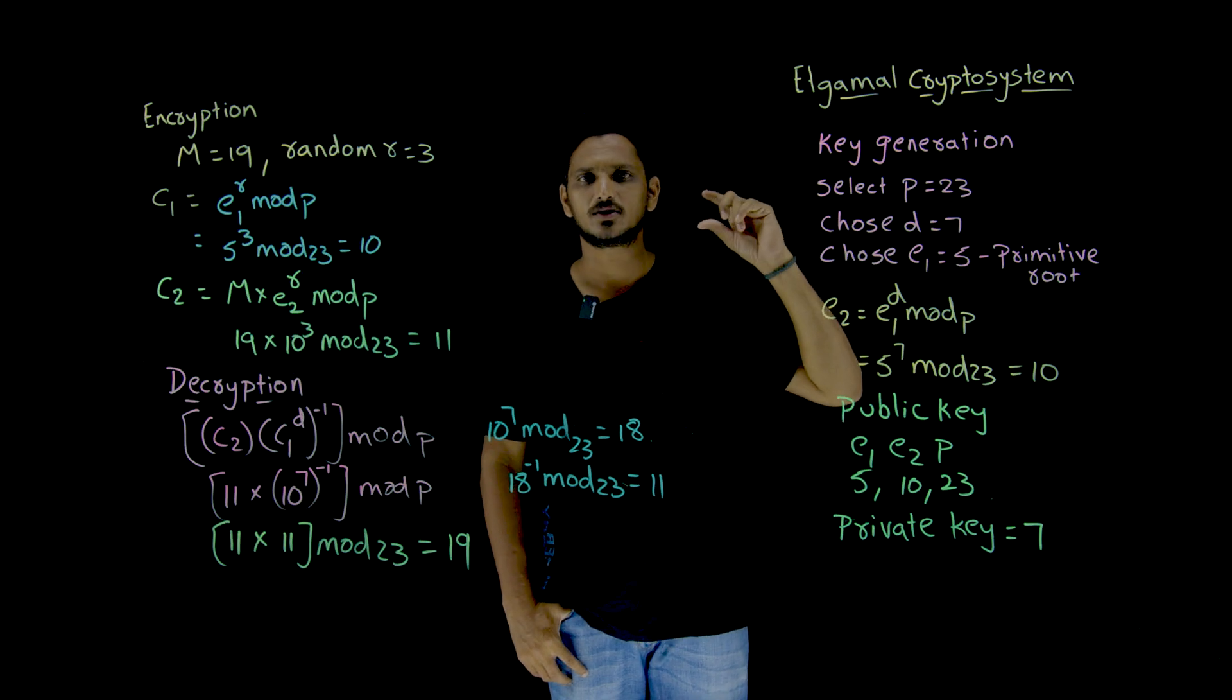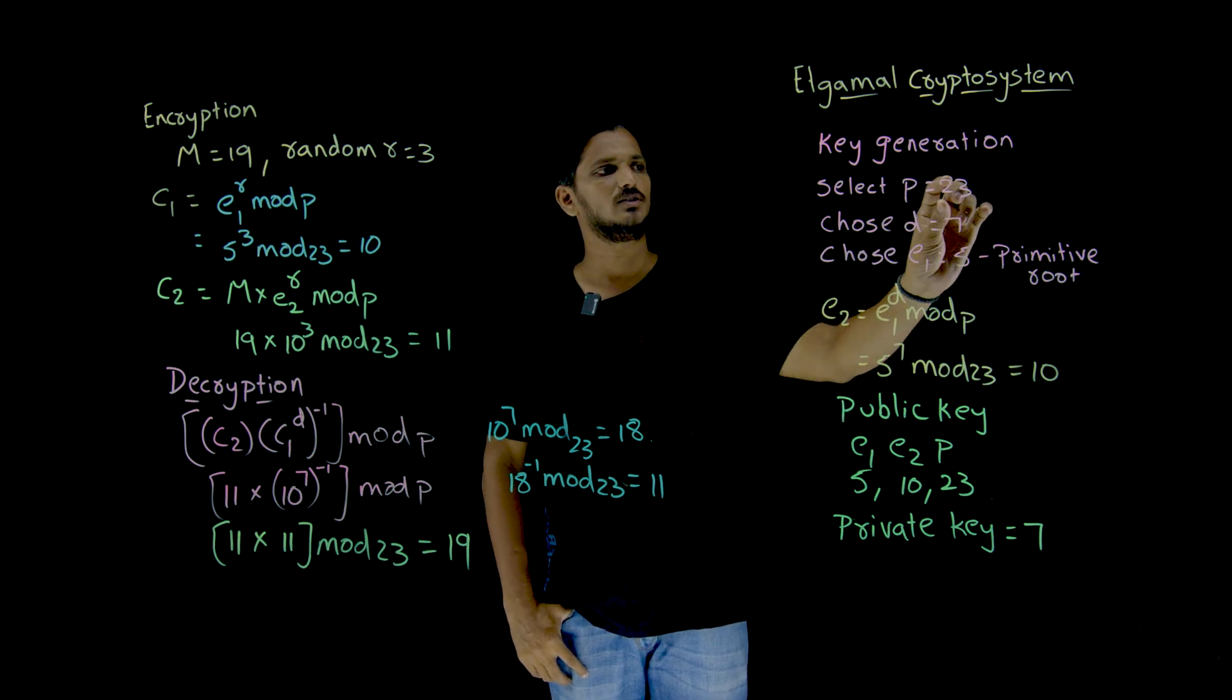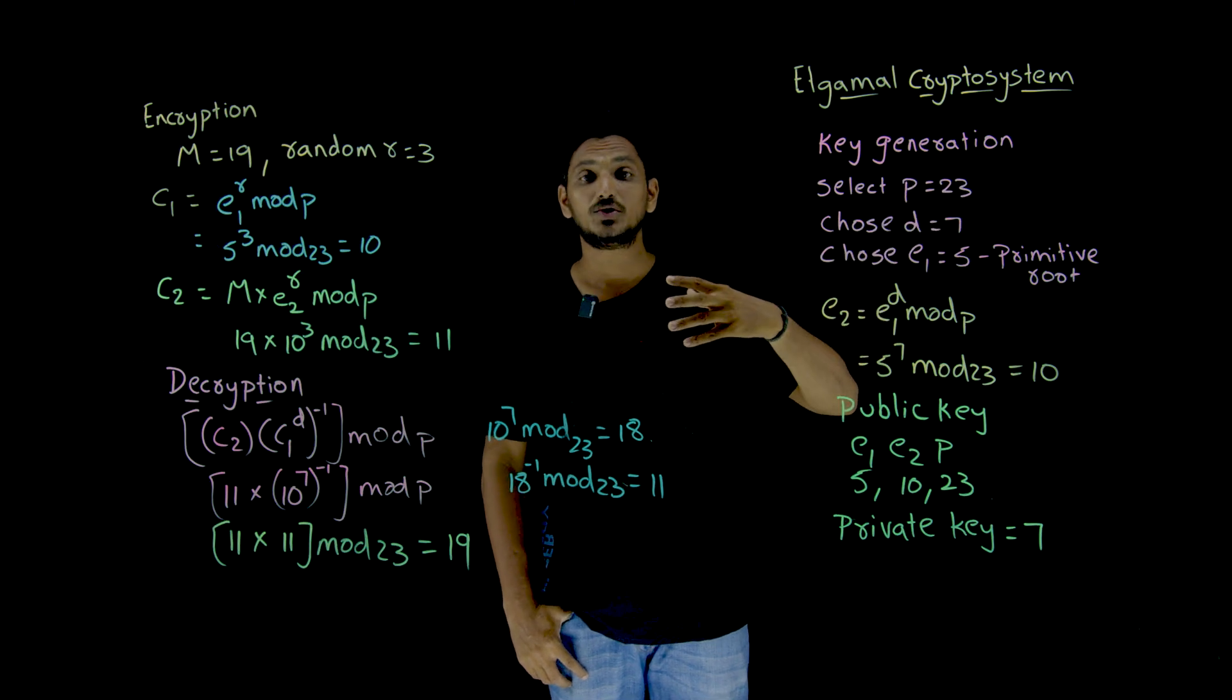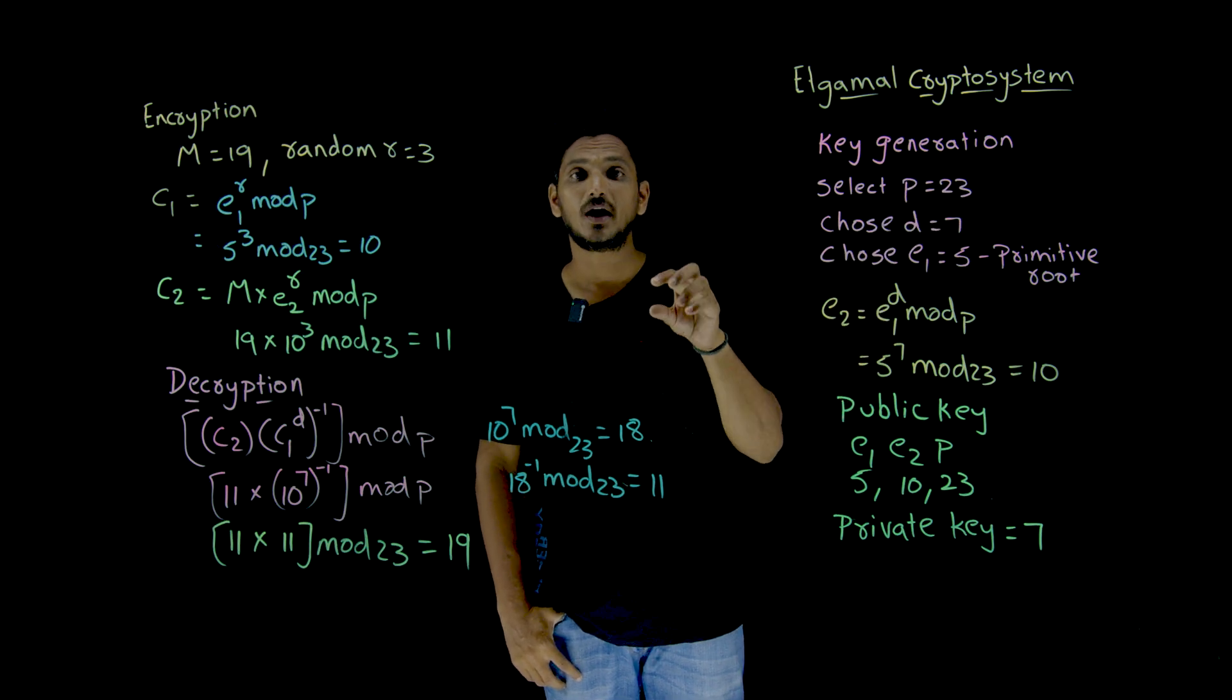Usually, we have to take a large prime number. In our example, we are considering the small one. From this Z23 star, we have to randomly select a private key.